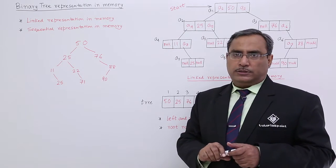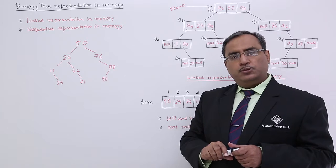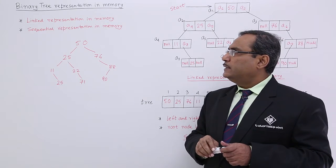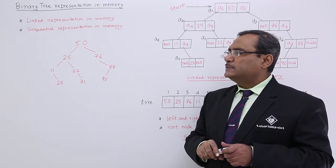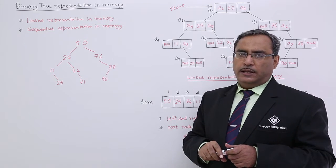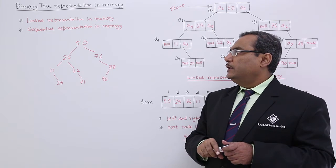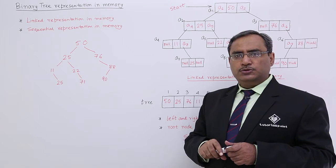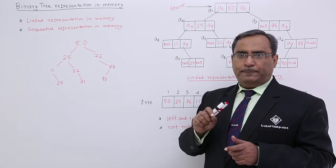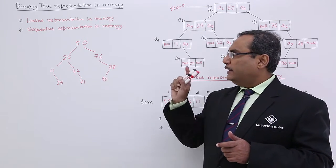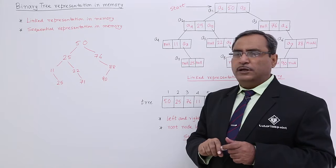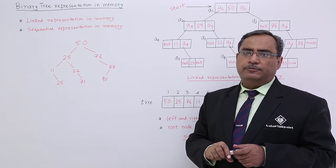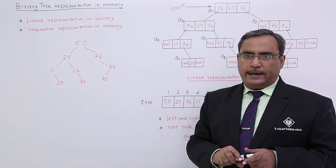There are two representations. One is the linked representation in the memory, another one is the sequential representation in the memory. In the linked representation, we shall use some link fields — left link and right link. In case of sequential representation, we shall represent one binary tree into an array.